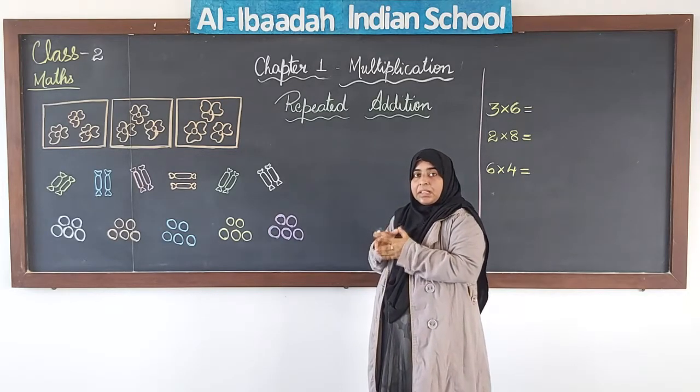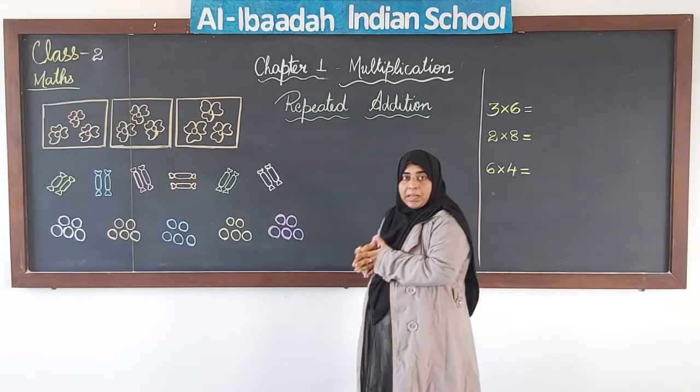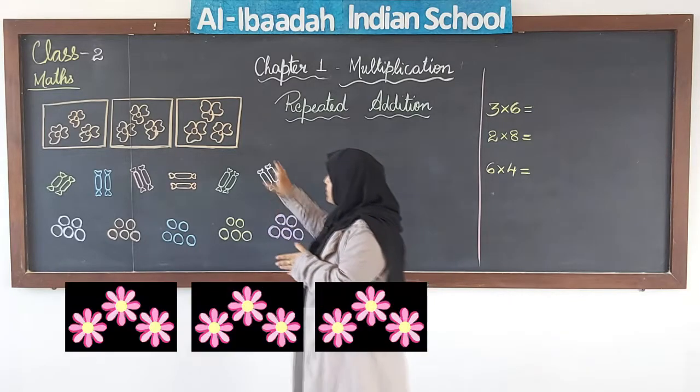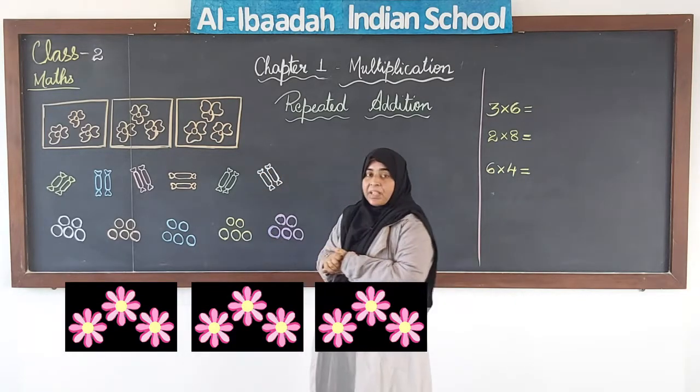Multiplication is nothing but repeated addition of a number. When we add the same number again and again, we can change that addition to multiplication. So the repeated addition can be changed to a multiplication fact. We will try to first understand this with the pictures drawn on the board.